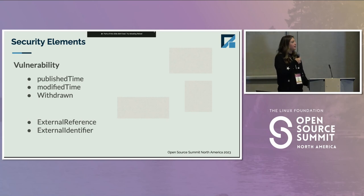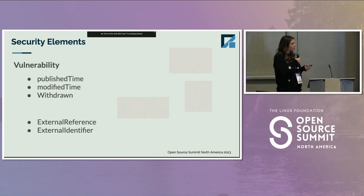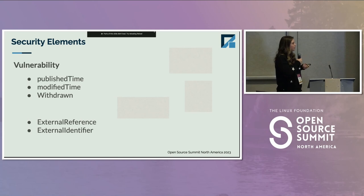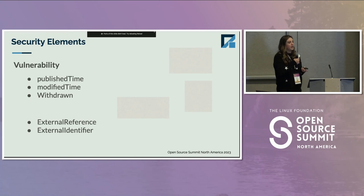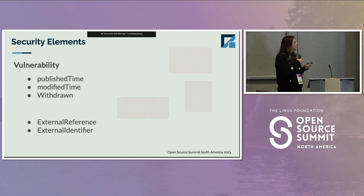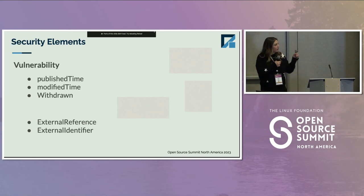A vulnerability is an element, and it has a published time, modified time, and withdrawn. These are all optional — you don't need to include them, but it's metadata that you can include about a vulnerability. A vulnerability might also have an external reference or an external identifier, and it may have one or more of these things. We'll go over an example of what that looks like.